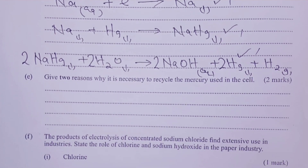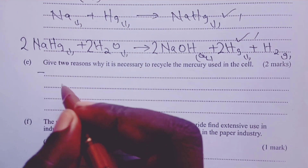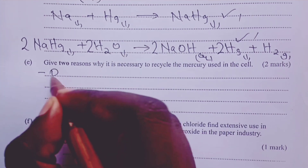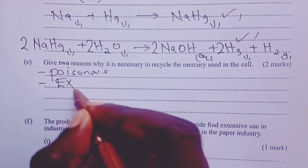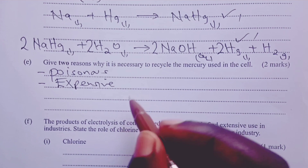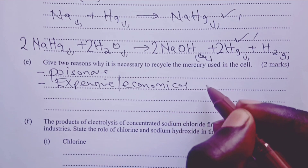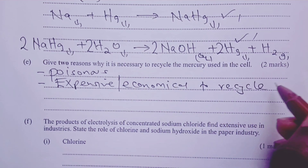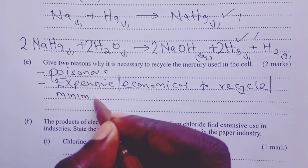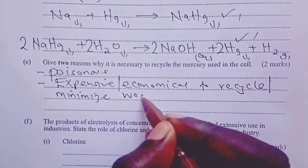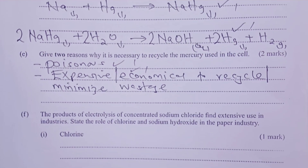Part E asks for two reasons why it is necessary to recycle mercury in the cell. Mercury is poisonous, so we recycle it. Mercury is also expensive, or alternatively, recycling mercury is economical. Another acceptable alternative is that recycling minimizes wastage. Any of these would earn the candidate one mark each.